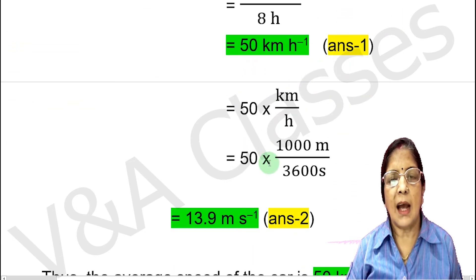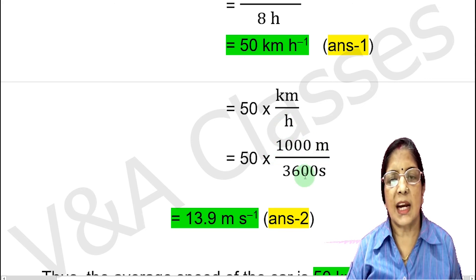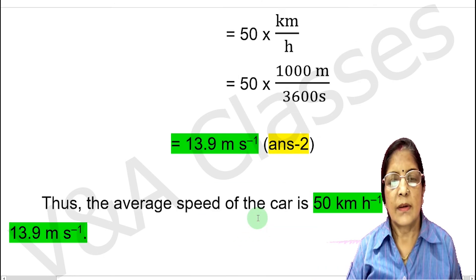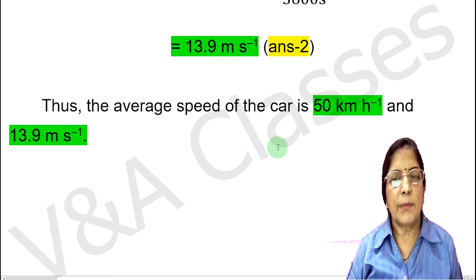Now let's convert from answer 1 to answer 2. Since we have 50 km per hour, we write this as 50 multiplied by km upon hour. To convert km to meters, we write 1,000 meters, and to convert hours to seconds, we write 3,600 seconds. After solving, the value comes to 13.9 meters per second. This is our answer 2. Thus, the average speed of the car is 50 km per hour and 13.9 meters per second.